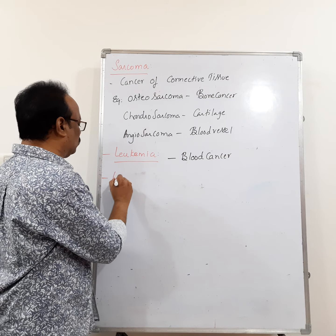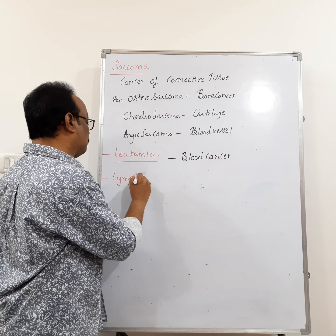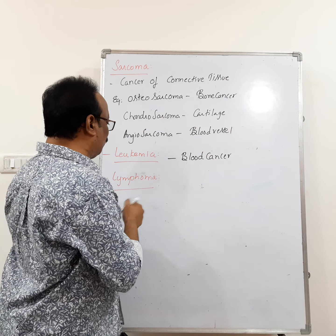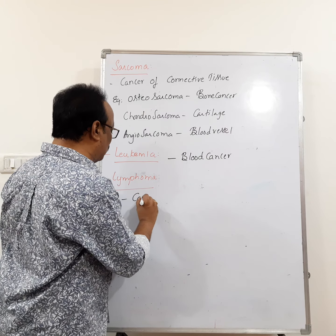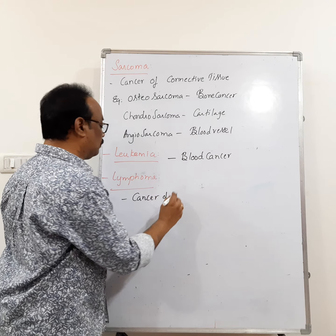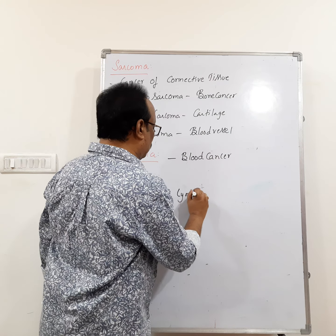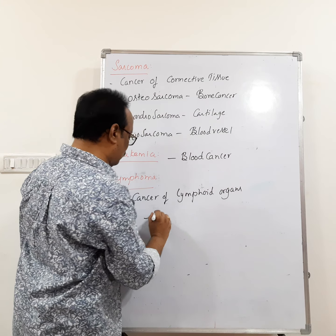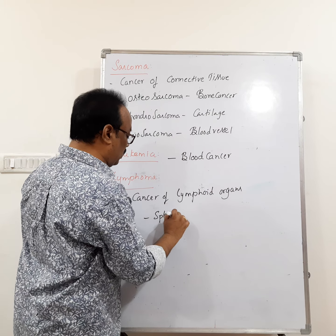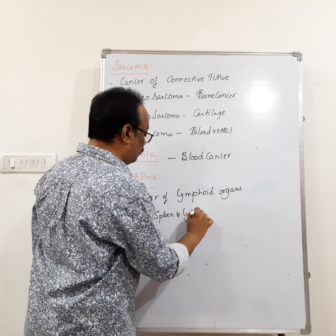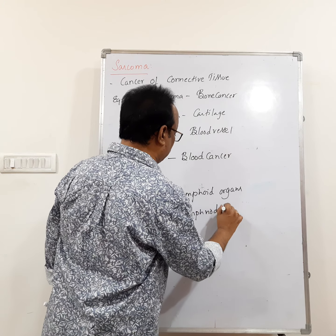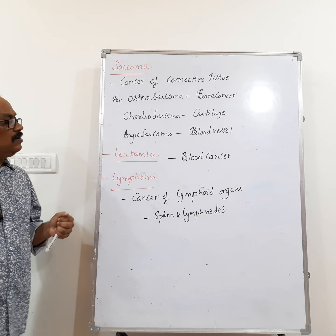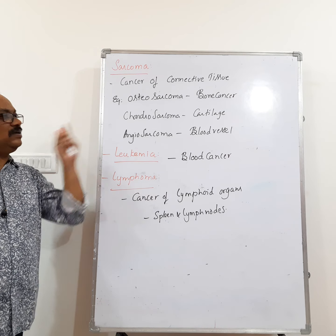The fourth type is lymphoma. Lymphoma is the cancer of lymphoid organs like the spleen and lymph nodes. These are the types of cancers.